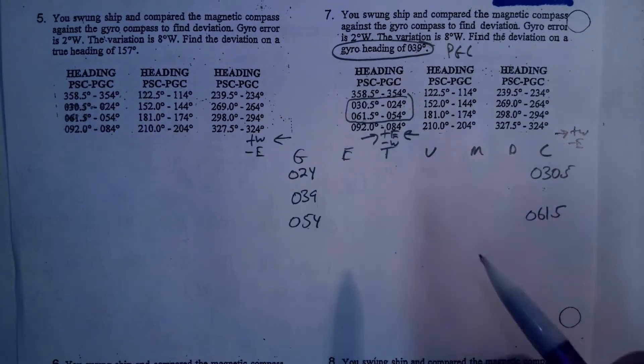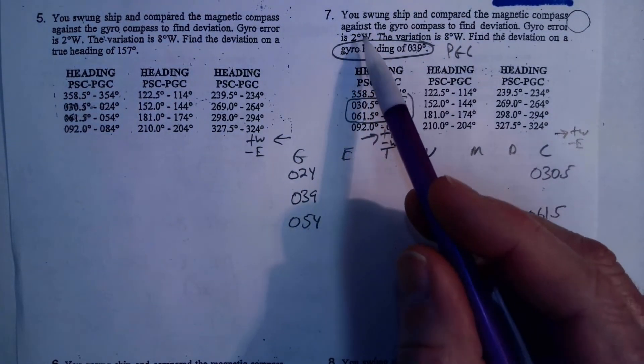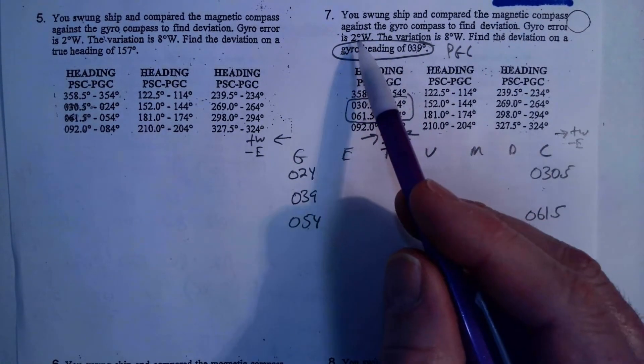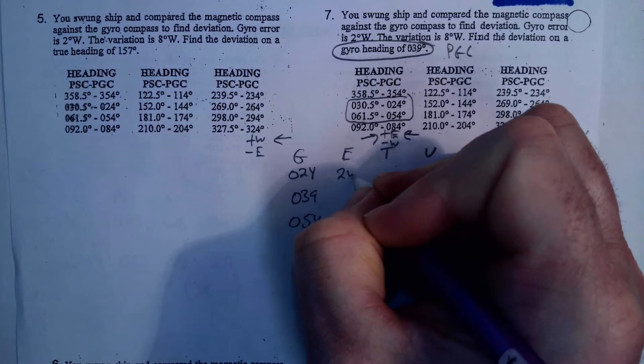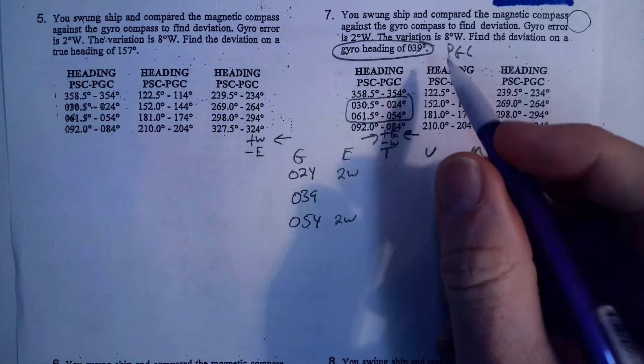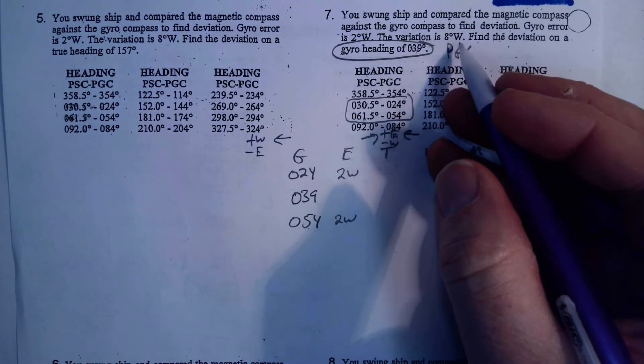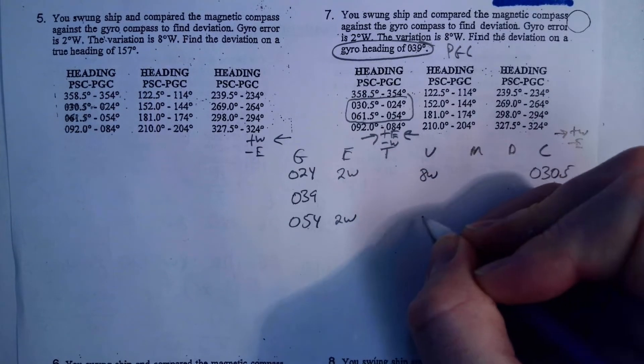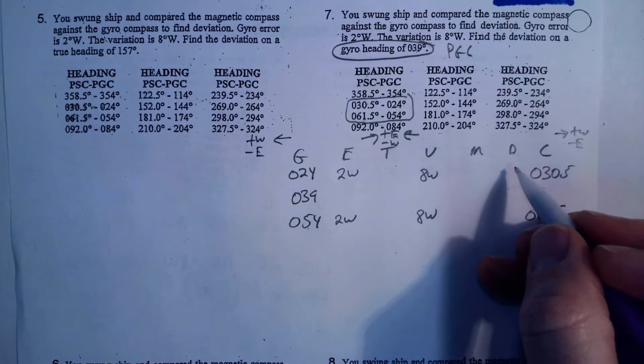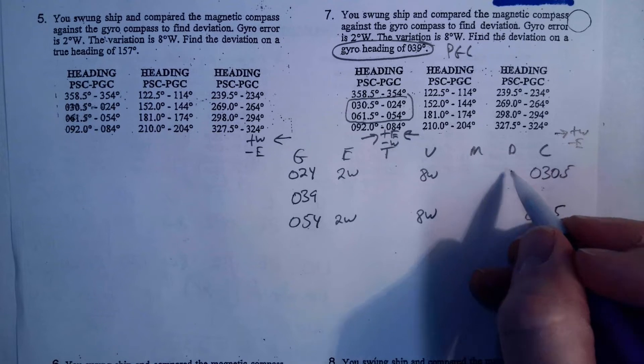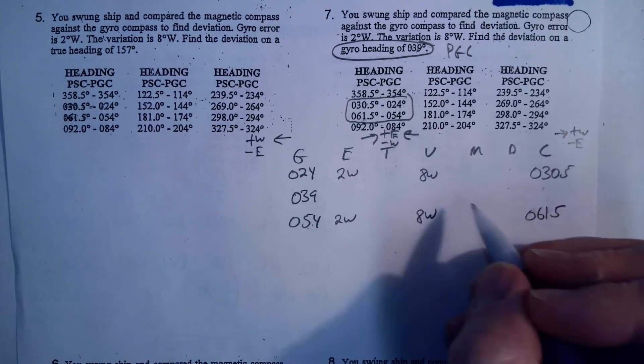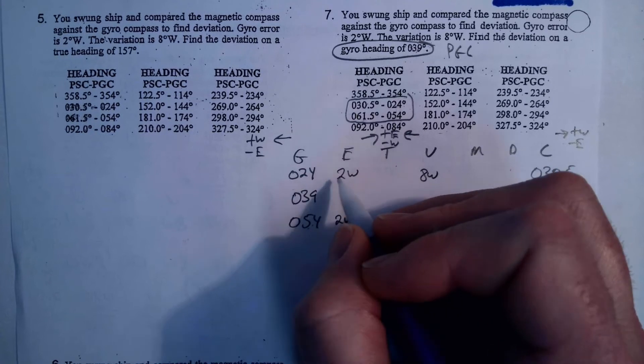Now, what I need to do is I need to populate the rest of my table here. So, my variation, my gyro error was 2 west, so I'm going to put 2 west here, 2 west here. And my variation is 8 west, 8 west, 8 west. So, now, what I got to do is I got to calculate the deviation for these two, and for these two, given this information.